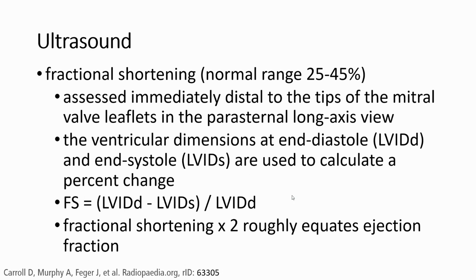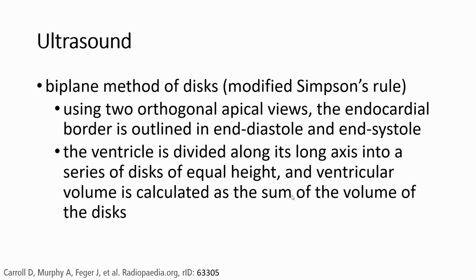Fractional shortening equals left ventricular end-diastolic dimension minus end-systolic dimension, divided by end-diastolic dimension. Fractional shortening multiplied by two virtually equals ejection fraction. The biplane method uses the apical four-chamber view, where the endocardial border is outlined at end-diastole and end-systole. The ventricle is divided along its long axis into a series of discs of equal height, and ventricular volume is calculated as the sum of the volumes of the discs.